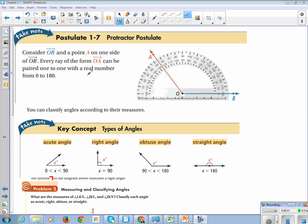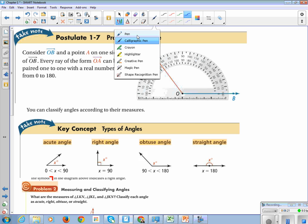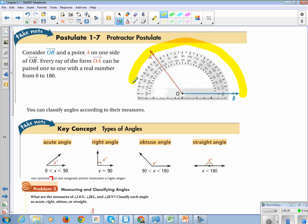All right, Protractor Postulate. Consider the angle, the ray OB, and a point A on one side of OB. Every ray of the form OA can be paired one-to-one with a real number from zero to 180. This is like the ruler postulate where you can give everybody an angle measure. I do like the picture because it tells you how to use a protractor: you line up one of your rays with the zero, and then you count from zero along your protractor until you get to your other ray.